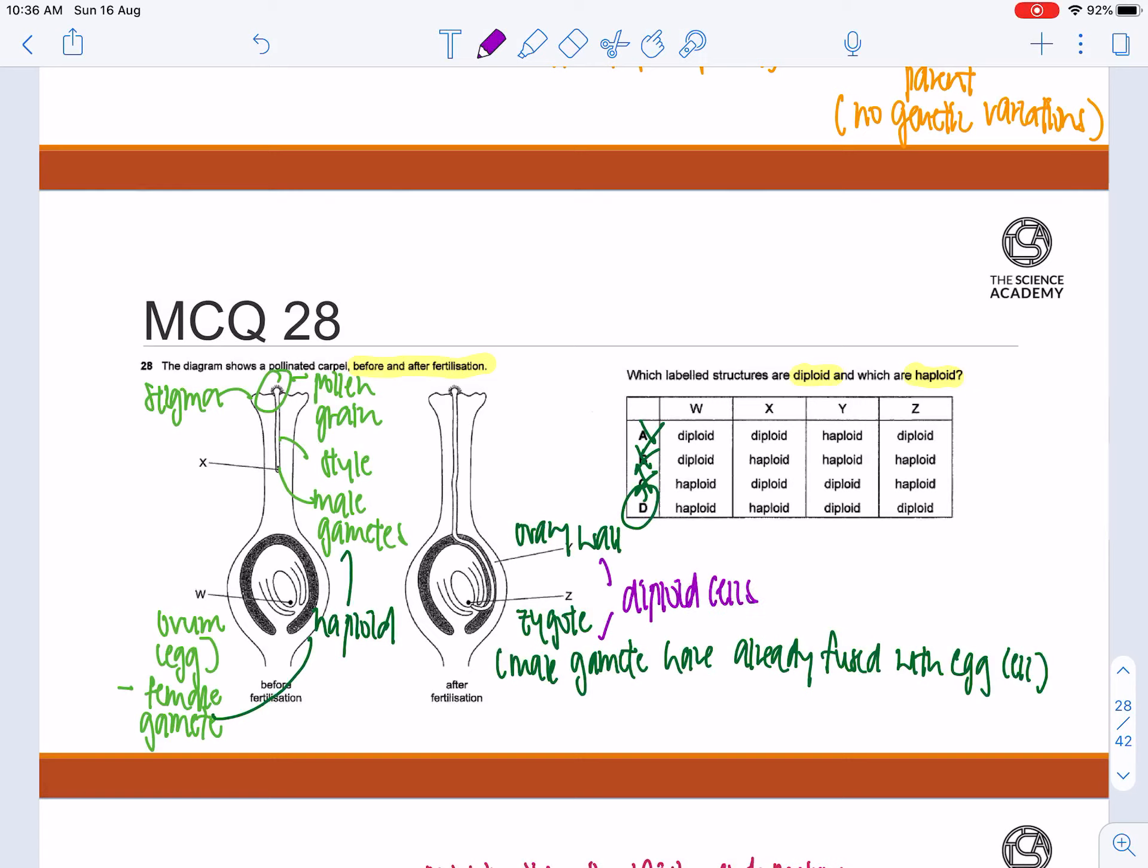Essentially, all cells apart from the gametes are diploid. So based on this, option D will be the correct answer.